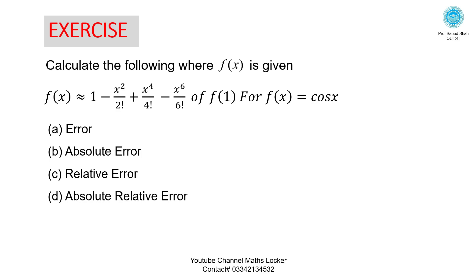Exercise: Calculate the following where f of x is given. f of x is approximately equal to 1 minus x squared over 2 factorial, plus x to the power 4 over 4 factorial, minus x to the power 6 over 6 factorial. Calculate f of 1 for f of x equal to cos x — find the error, absolute error, relative error, and absolute relative error. From the approximate symbol you can calculate the approximate value; from the exact equation you can calculate the exact value, then calculate each error type.